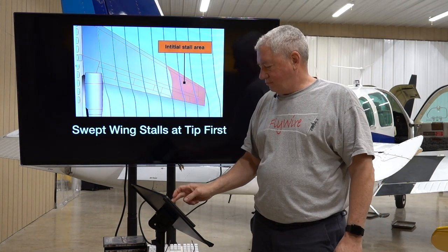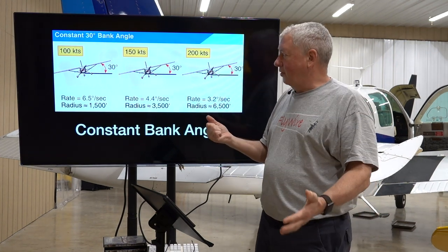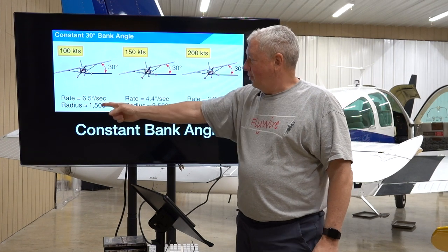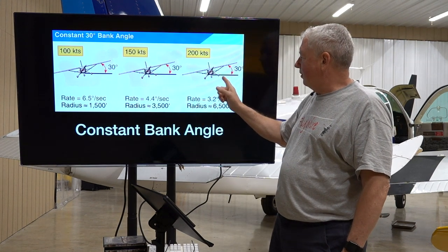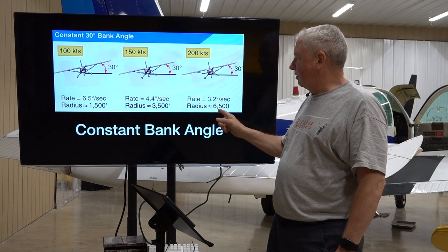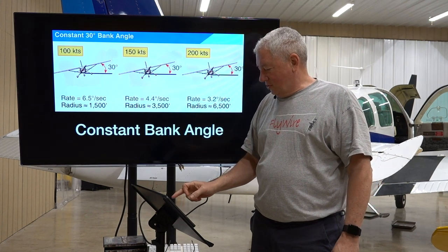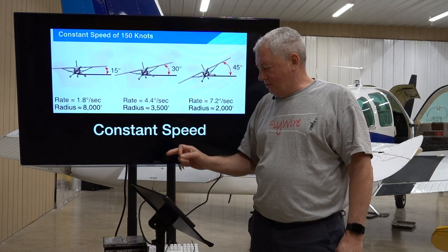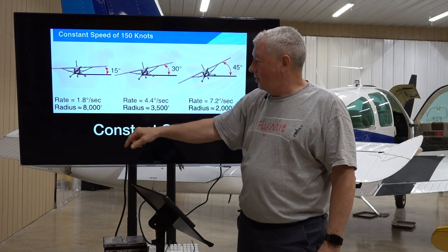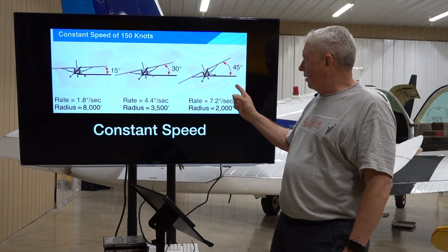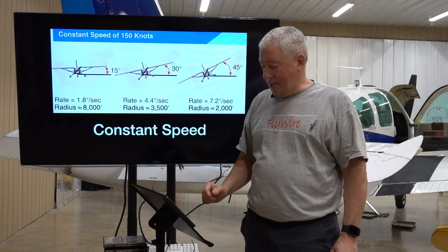Let's look at turn rate and radius. At a constant 30-degree bank angle at 100 knots, turn rate is 6.5 degrees per second and radius is 1,500 feet. At 200 knots with the same bank angle, the turn rate is halved but the radius is quadrupled. At 150 knots and 15 degrees bank, we have a turn rate of about 2 degrees per second and a radius of 8,000 feet. If we triple the bank angle to 45 degrees, the rate goes to 7.2 degrees per second and the radius goes down to 2,000 feet — a big change.